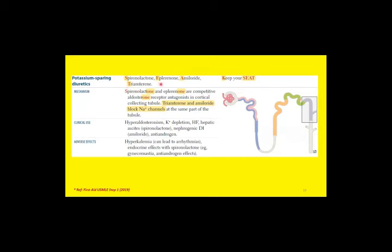Potassium-sparing diuretics: spironolactone (aldosterone antagonist) and amiloride and triamterene (sodium channel blockers). All act on the late distal tubule and collecting duct. Whether blocking aldosterone actions or blocking sodium channels — triamterene and amiloride block the ENaC (epithelial sodium channels) located in the late distal tubule and collecting duct. Additionally, thiazide diuretics have side effects including hyperglycemia, hyperlipidemia, hypercalcemia, and hyperuricemia with excessive use.